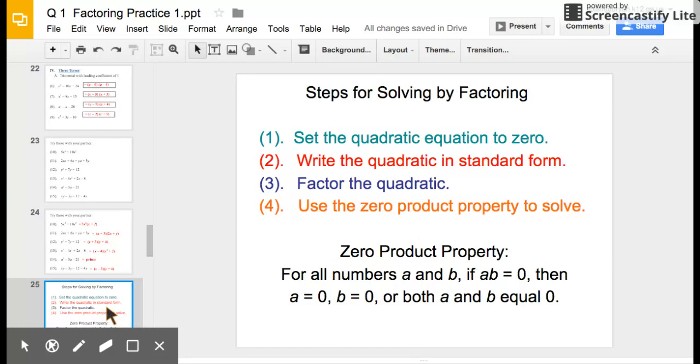So steps for solving by factoring. You factored yesterday. You got some beautiful parentheses. You had stuff inside them. What we want to do is solve them. So what's the actual answer? What does this factored problem give me? So we want to set the quadratic equal to 0 when we do this. We want to write the quadratic in standard form. Remember, standard form is ax squared plus bx plus c.